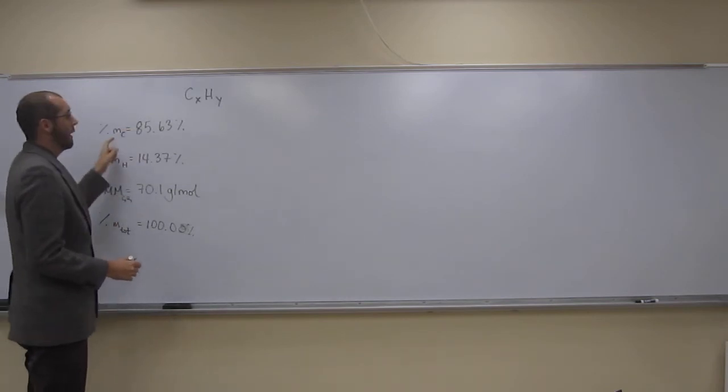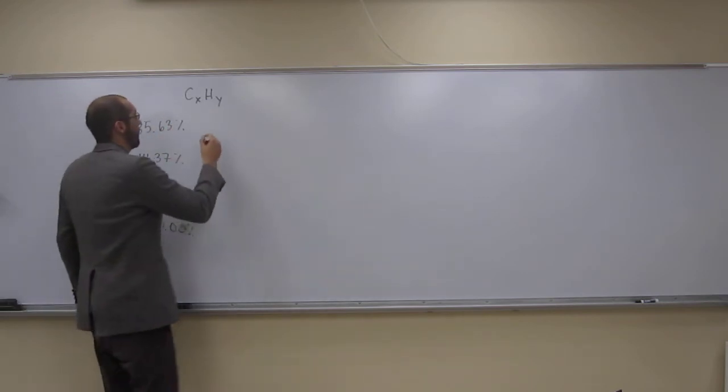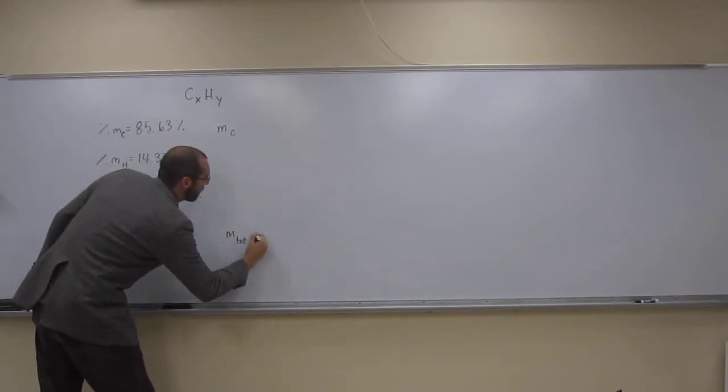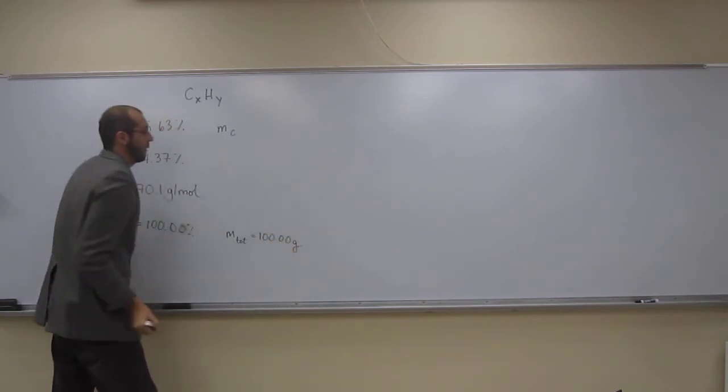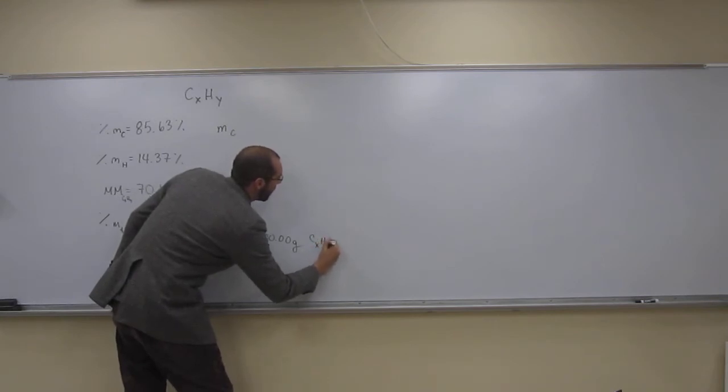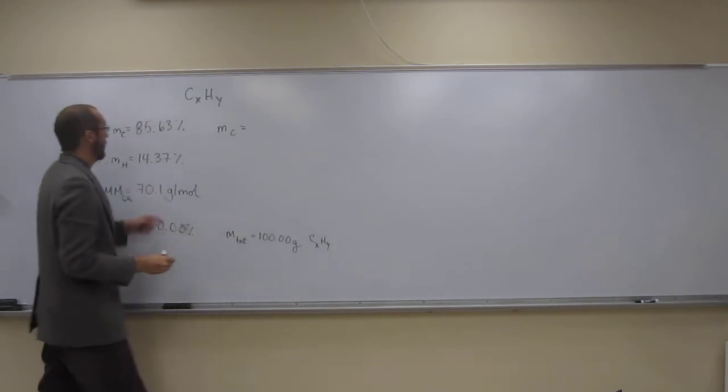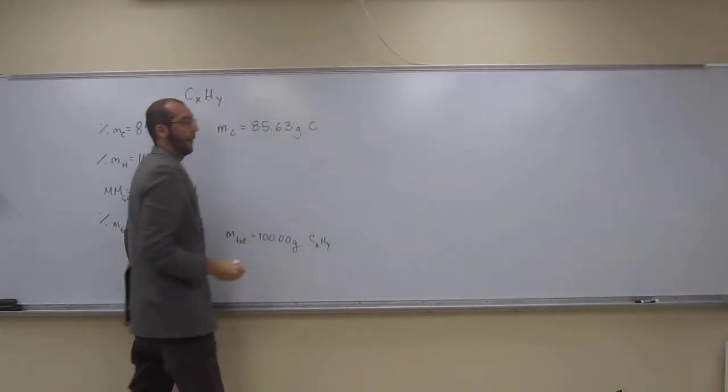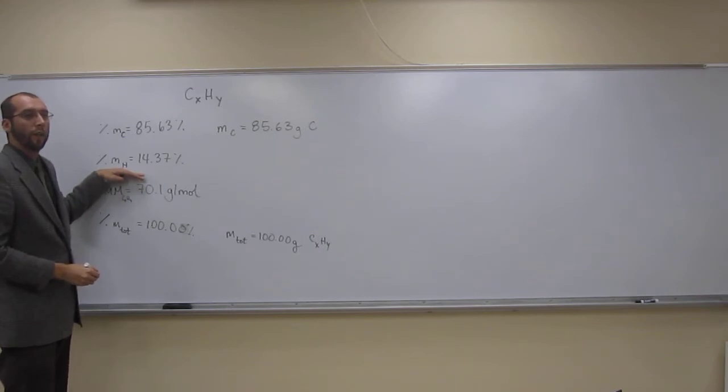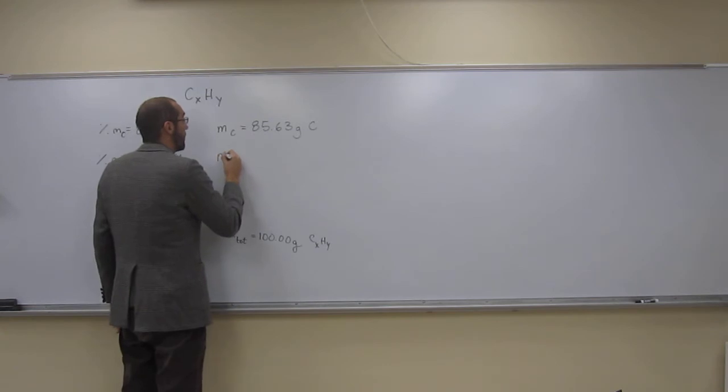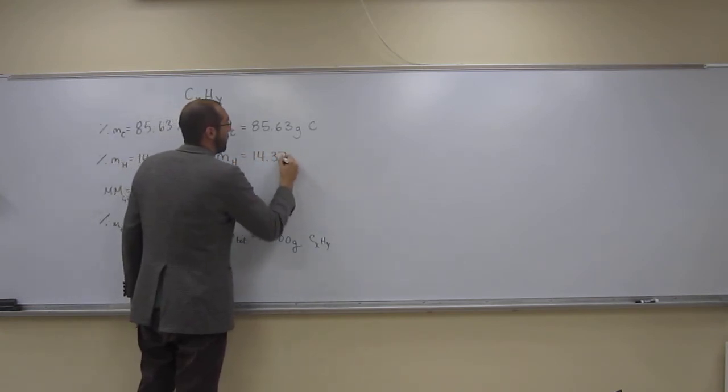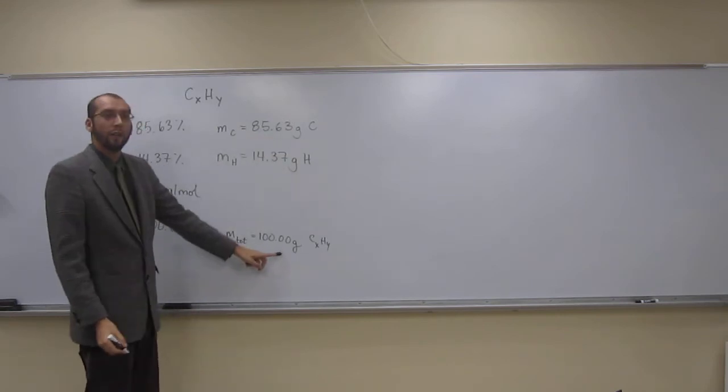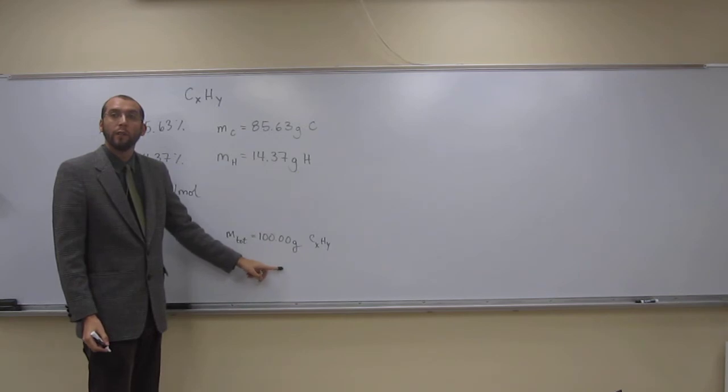So what we can do is convert this to actual masses. The mass of carbon, if we've got 100 grams total of the substance CXHY, then the mass of carbon is going to be 85.63 grams. The mass of hydrogen is going to be 14.37 grams. Because that's 85.63% of 100 grams and 14.37% of 100 grams.